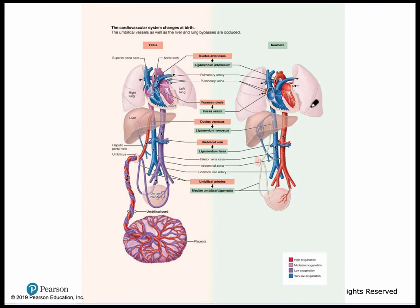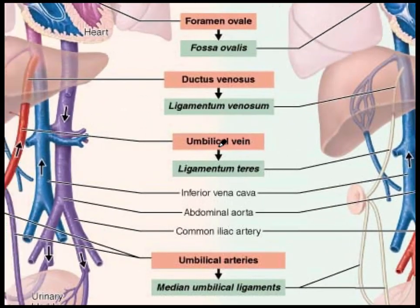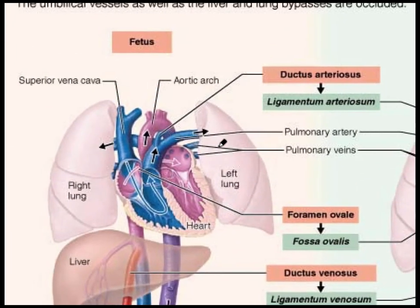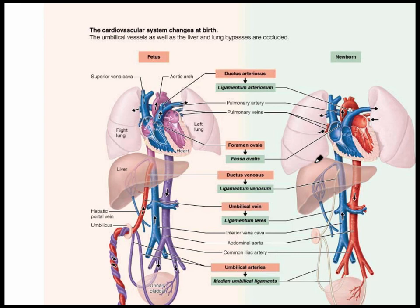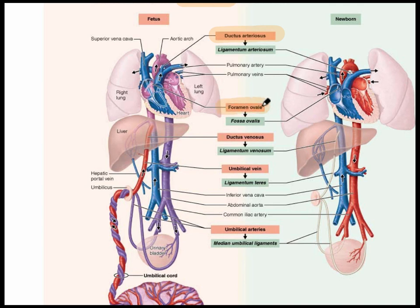This slide shows important adaptations that occur in the fetus. The fetus is on the left-hand side and the newborn is on the right-hand side. In fetal circulation, the liver and the lungs are not working, so there have to be important bypasses or shunts that allow blood to be mixed. There are two shunts in the heart region: the ductus arteriosus and the foramen ovale. Both close when the child is born, and in fetal circulation these shunts allow oxygenated and deoxygenated blood to mix.